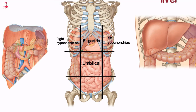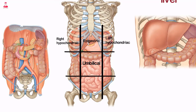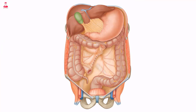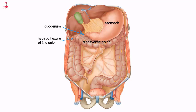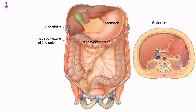The liver is bordered superiorly, laterally, and anteriorly by the right hemidiaphragm. The medial surface is bordered by the stomach, duodenum, and transverse colon. The inferior surface is bordered by the hepatic flexure of the colon, and the posterior surface is bordered by the right kidney.